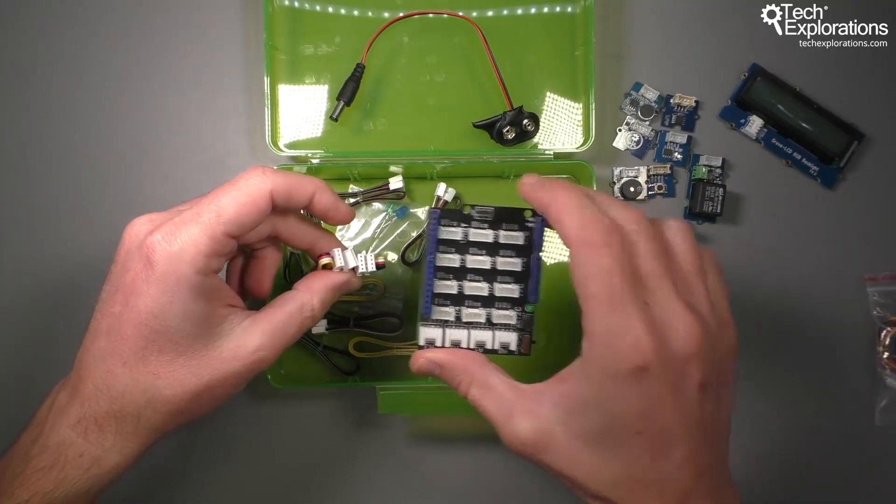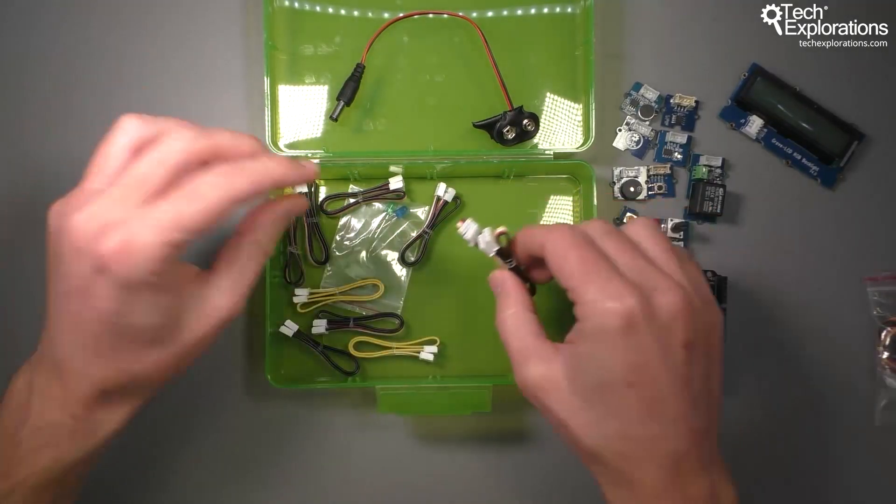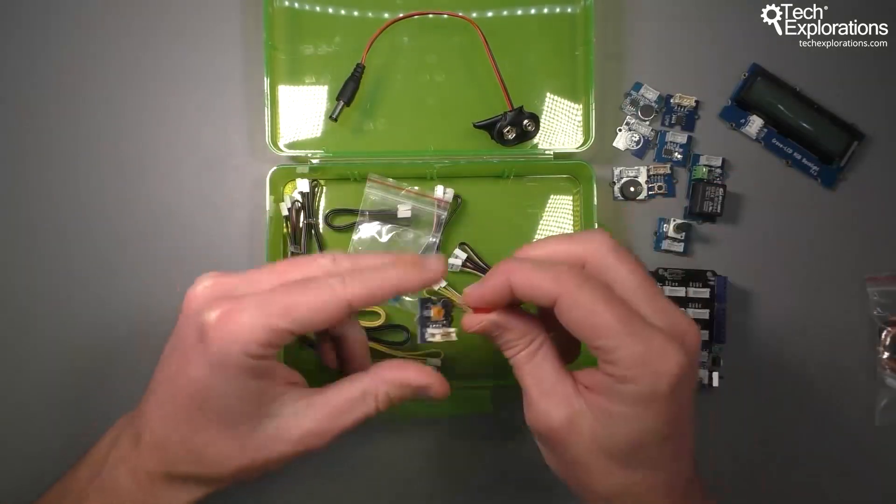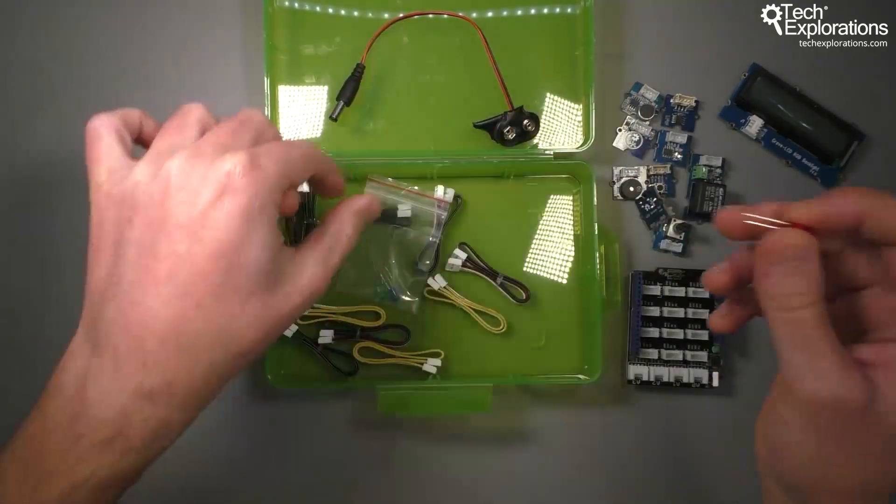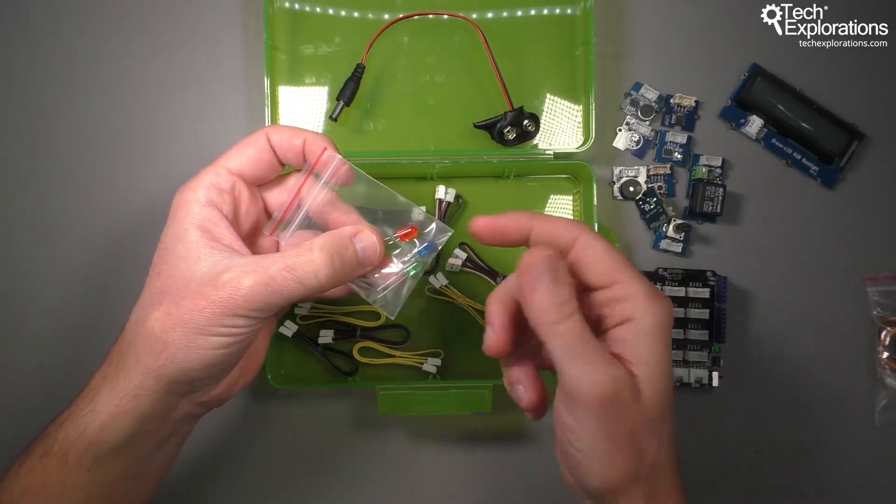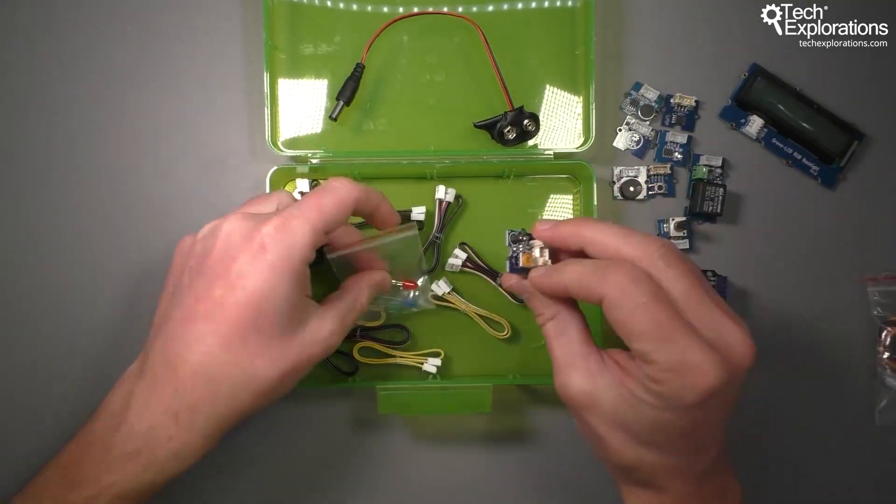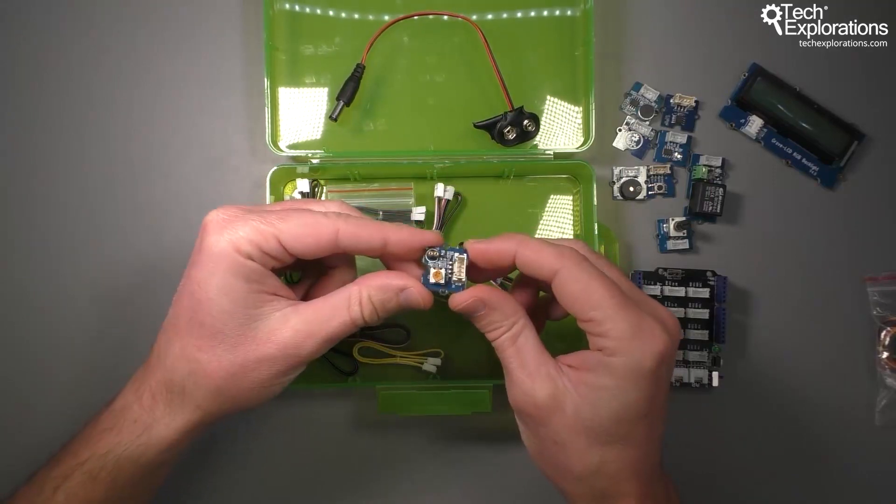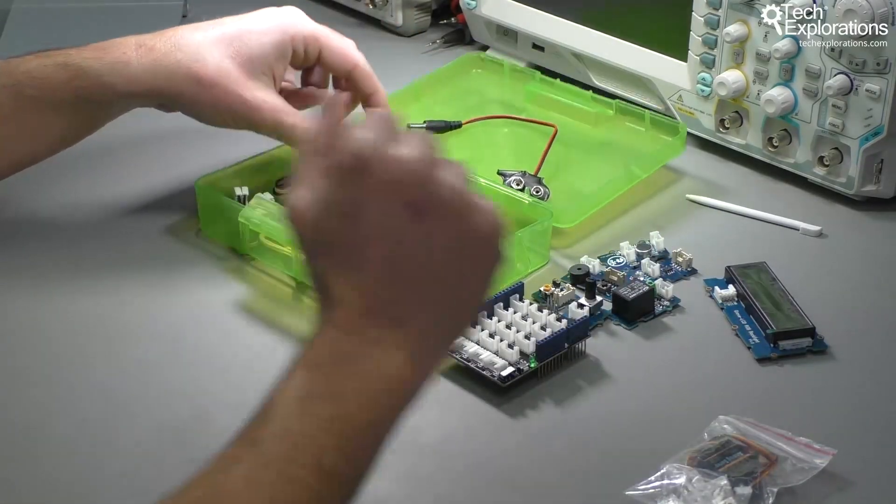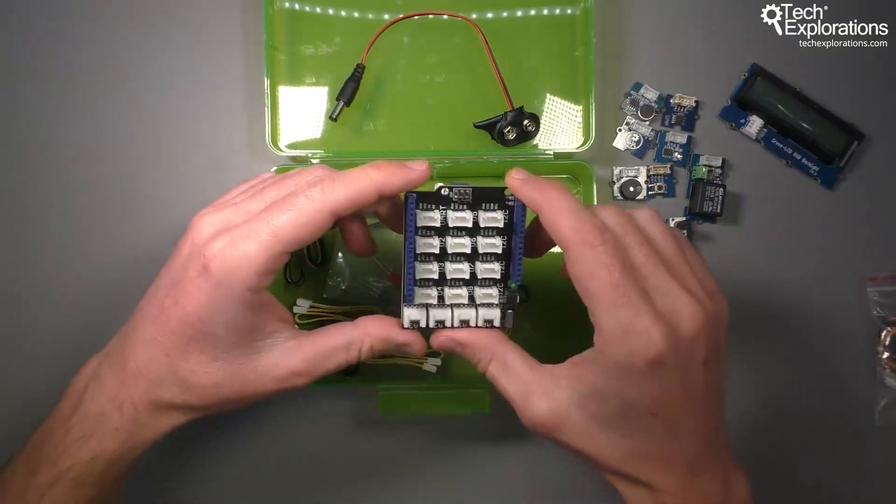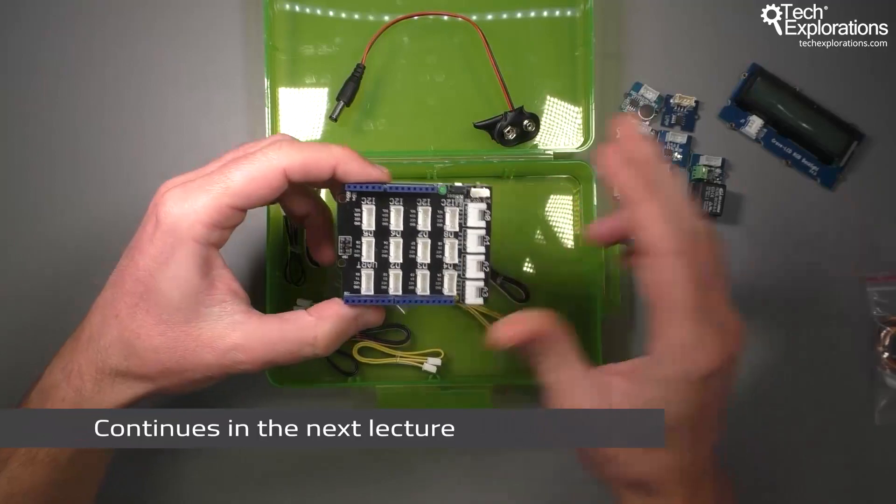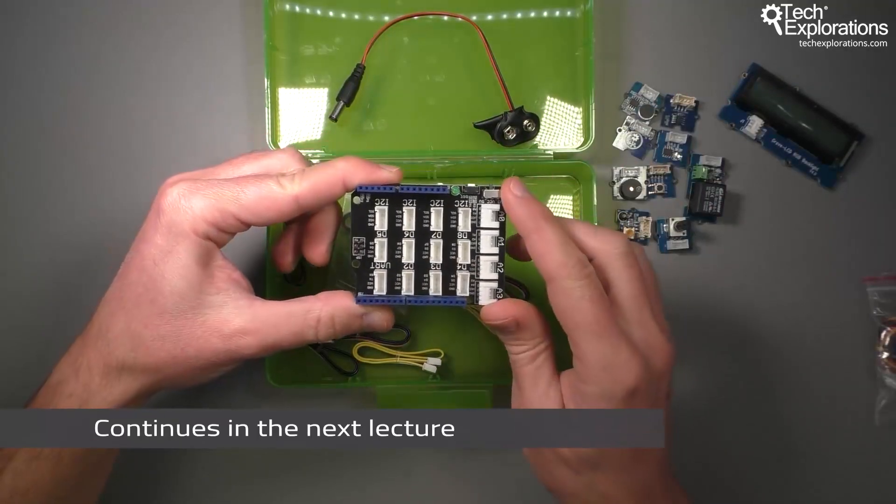The last thing are the LEDs. The Grove starter kit comes with three LEDs: red, green, and blue that we can use with the LED module. Now let's move on to the next lecture where I will spend a bit of time to explain how to use these components with the base shield.